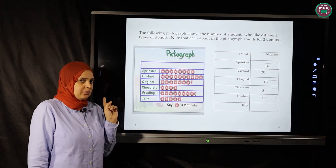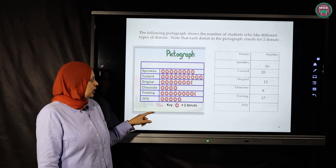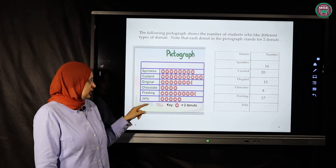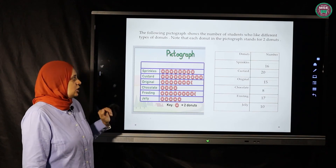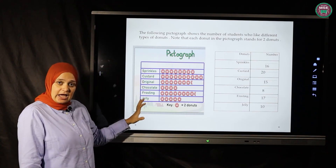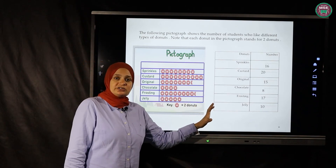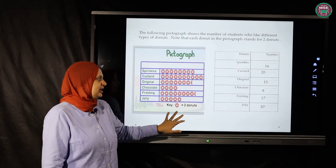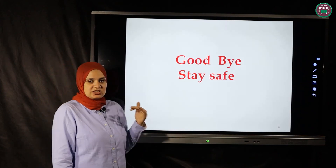Remember, each whole donut picture stands for two, and a half donut picture stands for one. For jelly: two, four, six, eight, ten — jelly has ten. All the data has now been moved into a small table to make it easy to answer the questions.